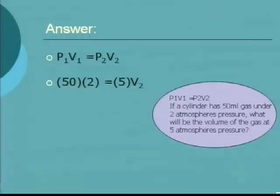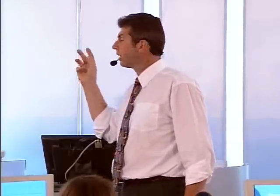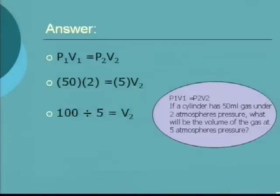Chris — the 5 atmospheres pressure. Once the person pushes down on the piston, the pressure increases from 2 atmospheres to 5. The unknown we need to find is the volume afterwards. We multiply 50 by 2, because brackets side by side means multiply — that gives 100. To get V2 on its own, we divide both sides by 5. So 100 divided by 5 gives us V2.